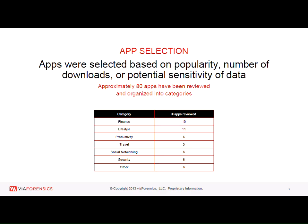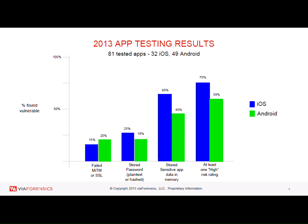We have a mobile security product that does security testing on iOS and Android, and we regularly run apps through it from the App Store. Recently we looked at about 80 apps — finance, lifestyle — basically the most popular apps on the App Store for both iOS and Android. The findings: 15% of iOS and 20% of Android apps fail man-in-the-middle. That is completely solvable and frankly completely inexcusable. Also, 25% of iOS apps store your passwords in plain text on the device — the forensic techniques we're talking about today will recover that password immediately.